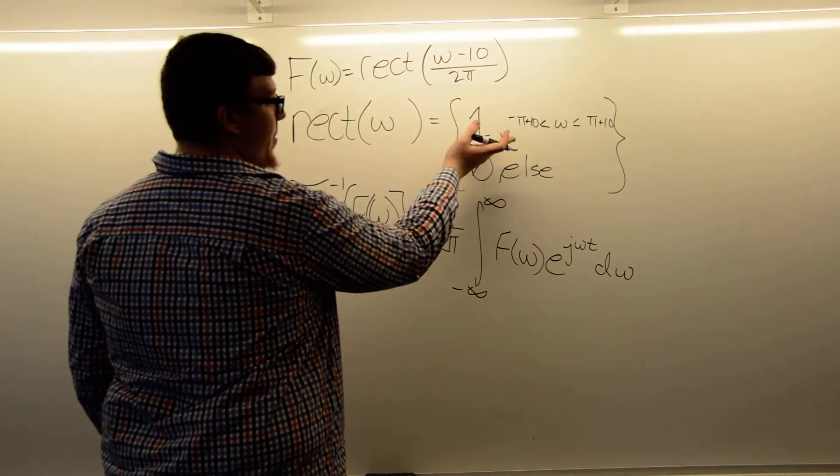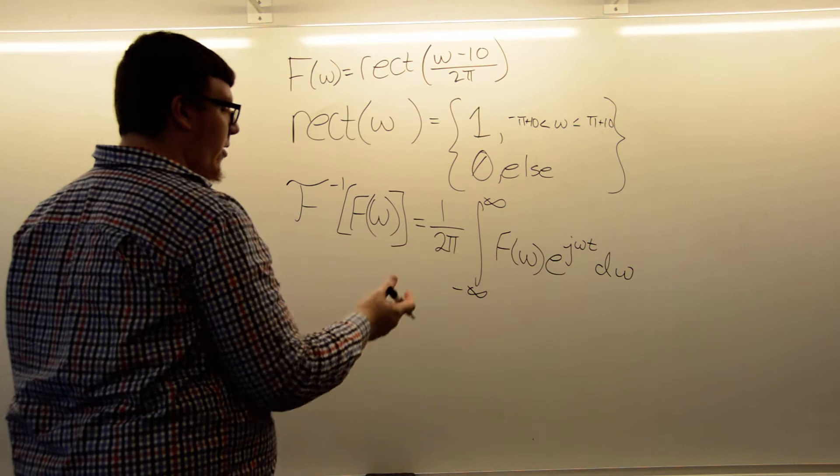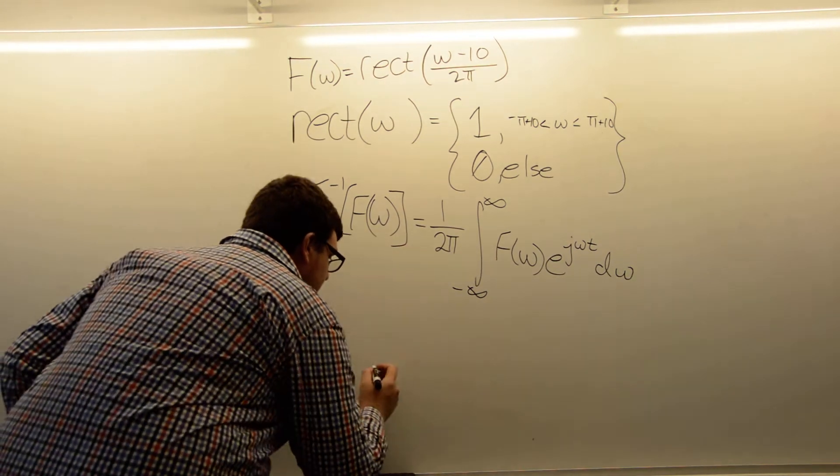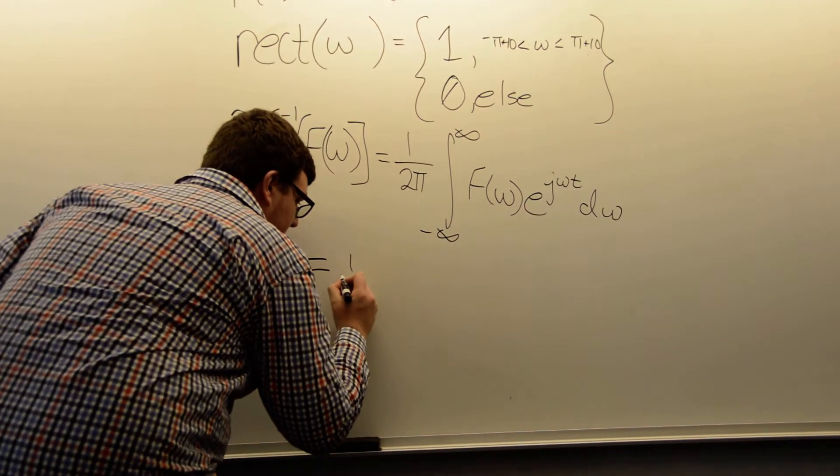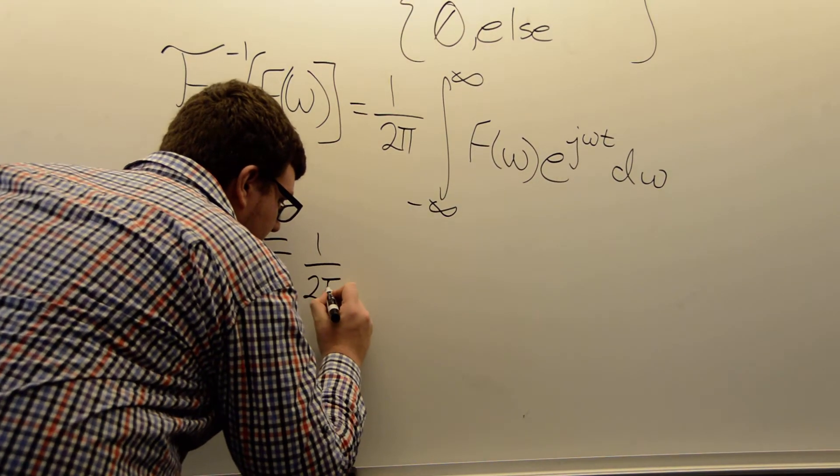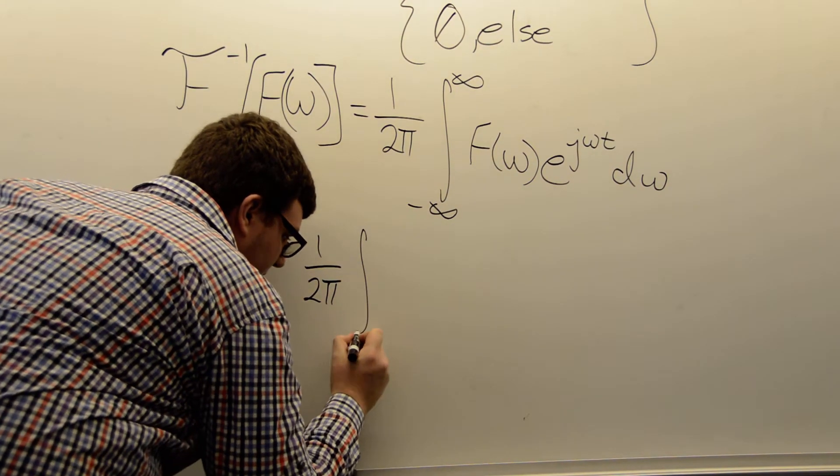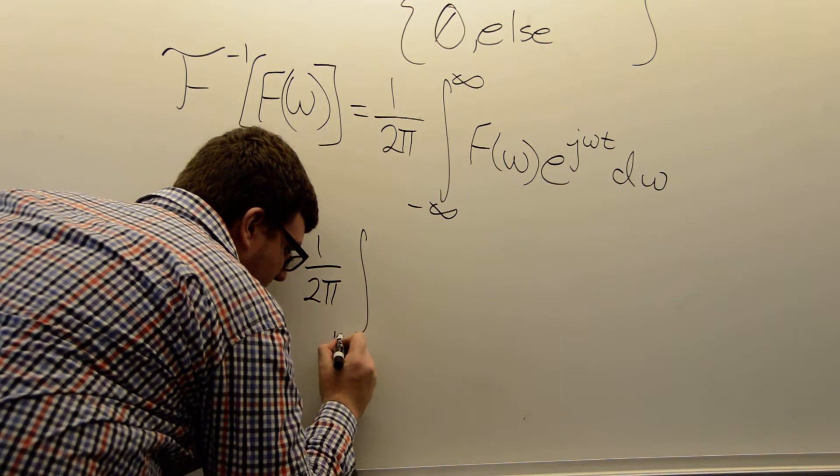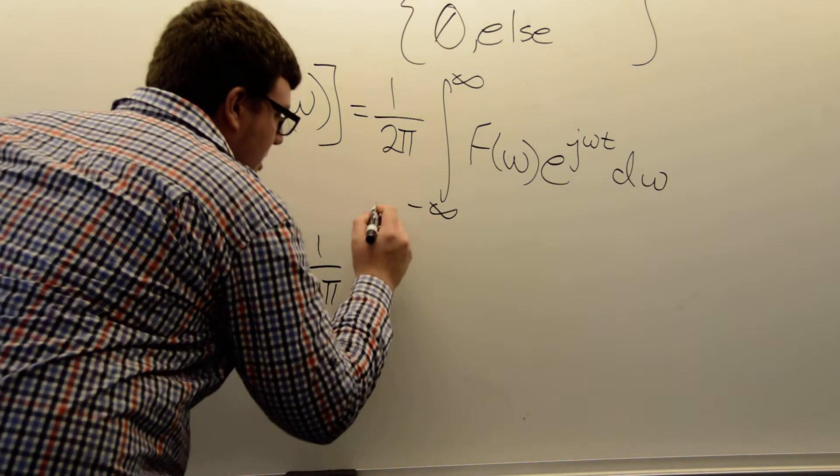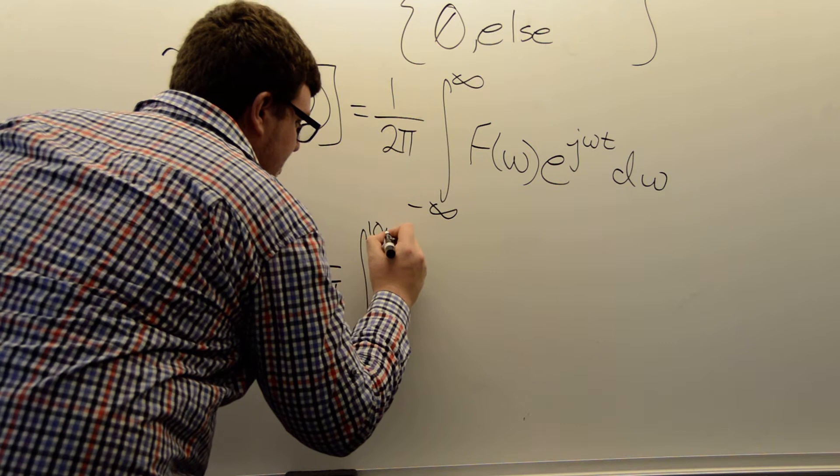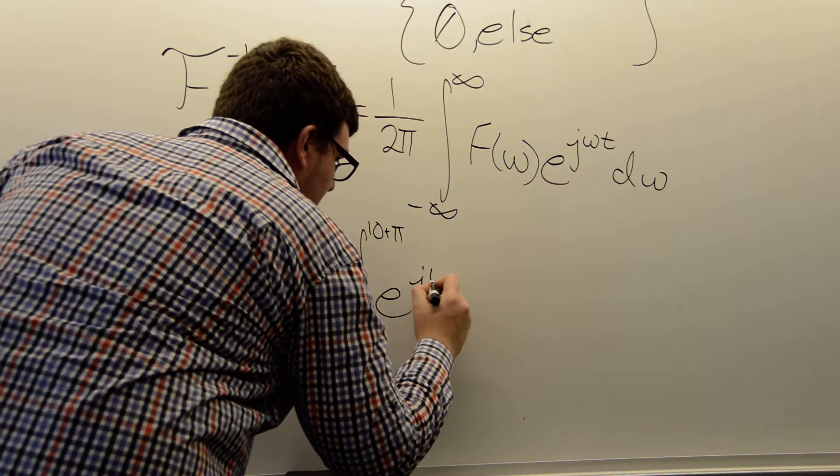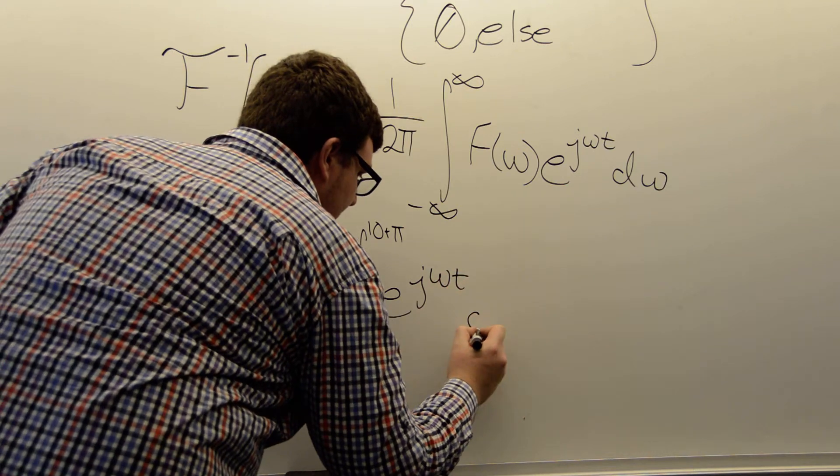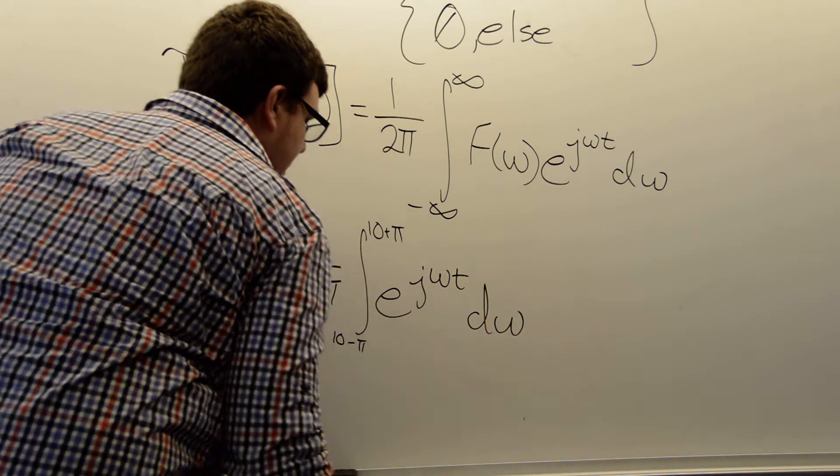And in those bounds, we would just be integrating 1, so our F of ω would be 1. So for our purposes for this function, it would be 1 over 2π, the integral from 10 minus π to 10 plus π of e to the jωt dω.